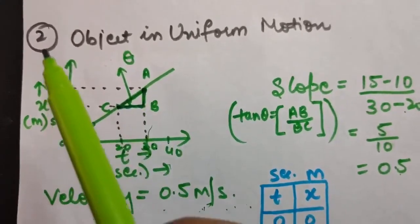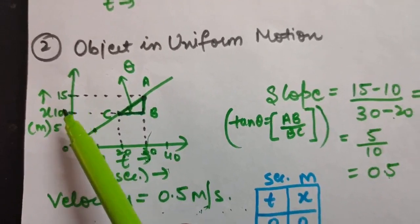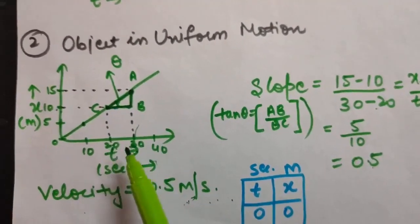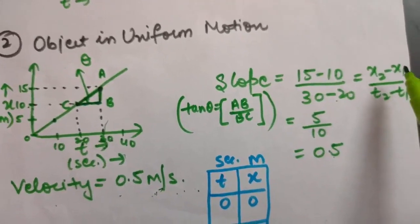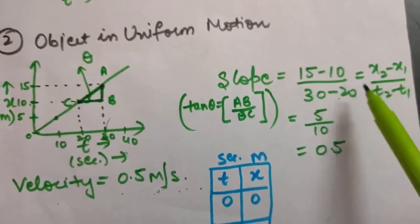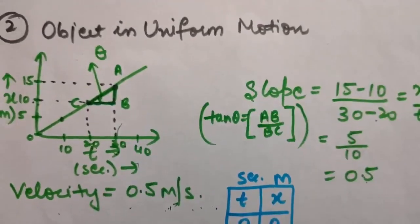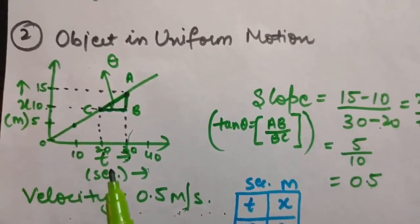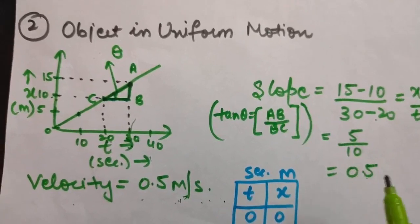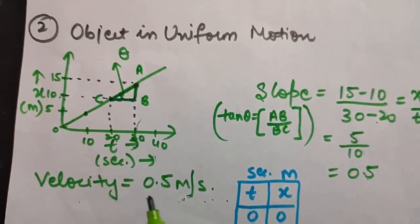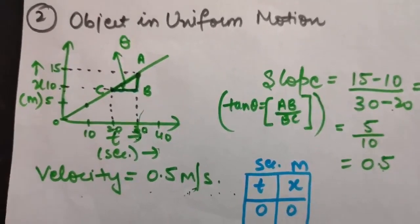AB is displacement, written as x2 minus x1, and BC is t2 minus t1. So slope equals displacement divided by time interval, which is velocity. Therefore, the slope of a position-time graph gives velocity. From this graph, the velocity is 0.5 meters per second. Always remember: slope of a position-time graph gives velocity.